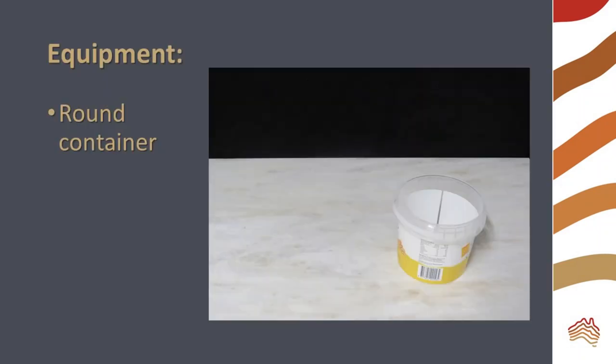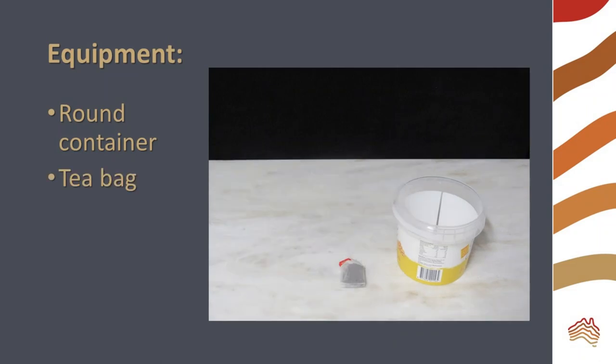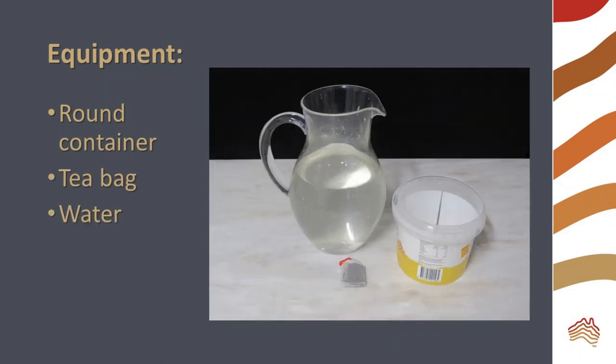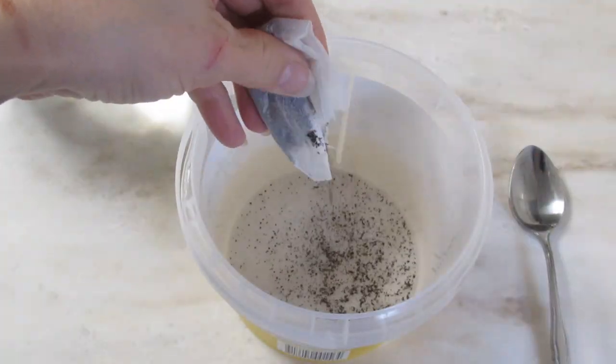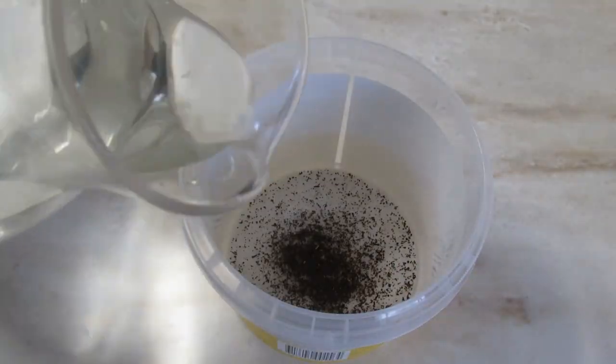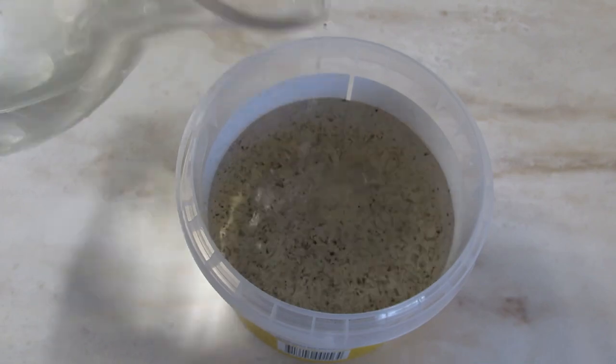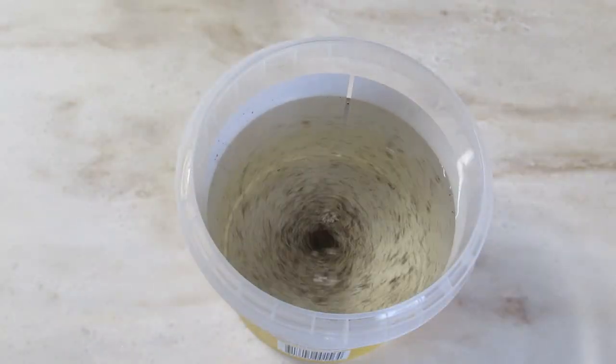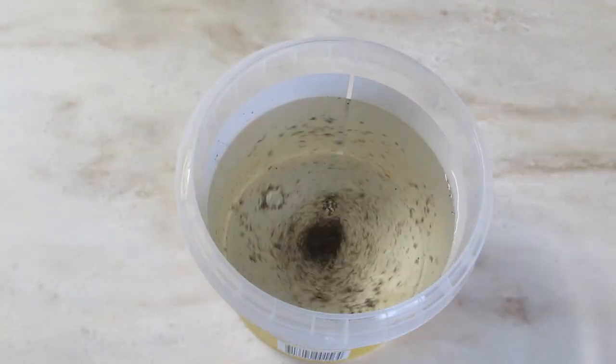You can model this using a round container, a tea bag, some water, and a spoon. Tear open the tea bag and pour some tea into the container. Add water and stir briefly. Just start the water moving and observe what happens. You can see the tea clumping in the center.